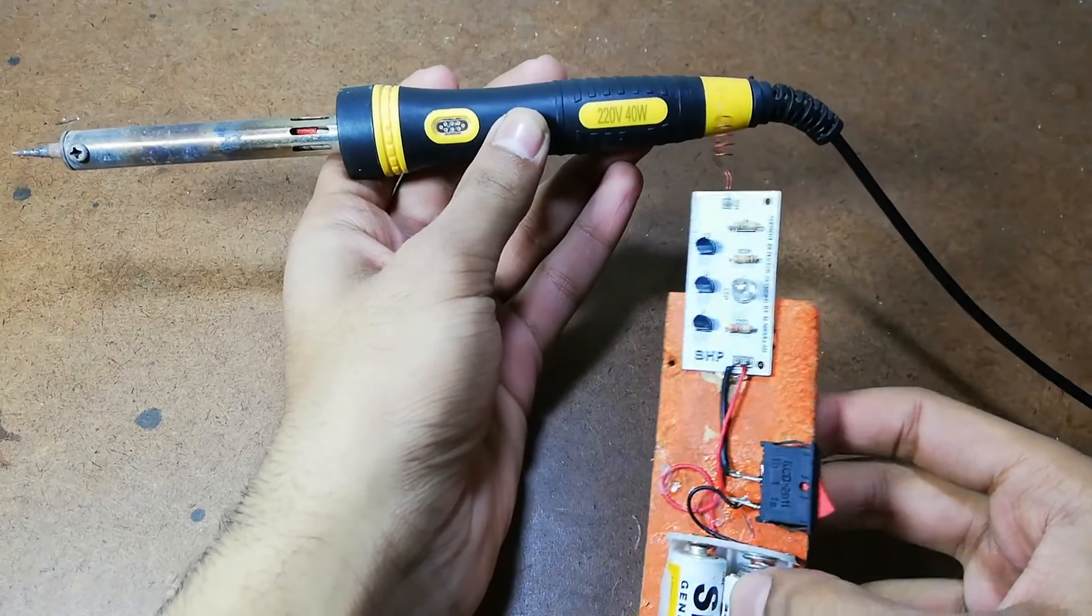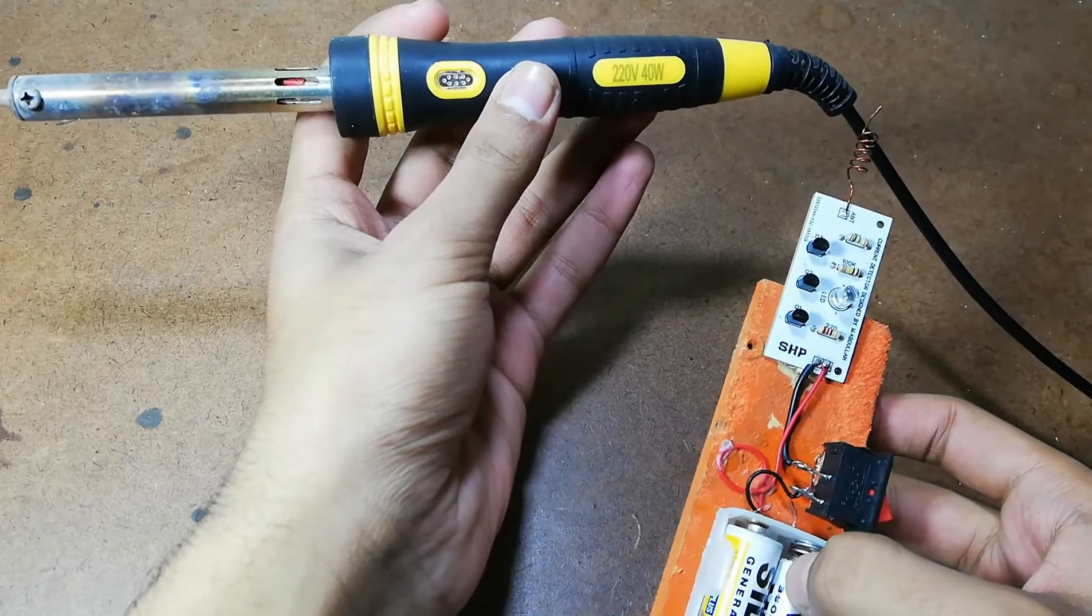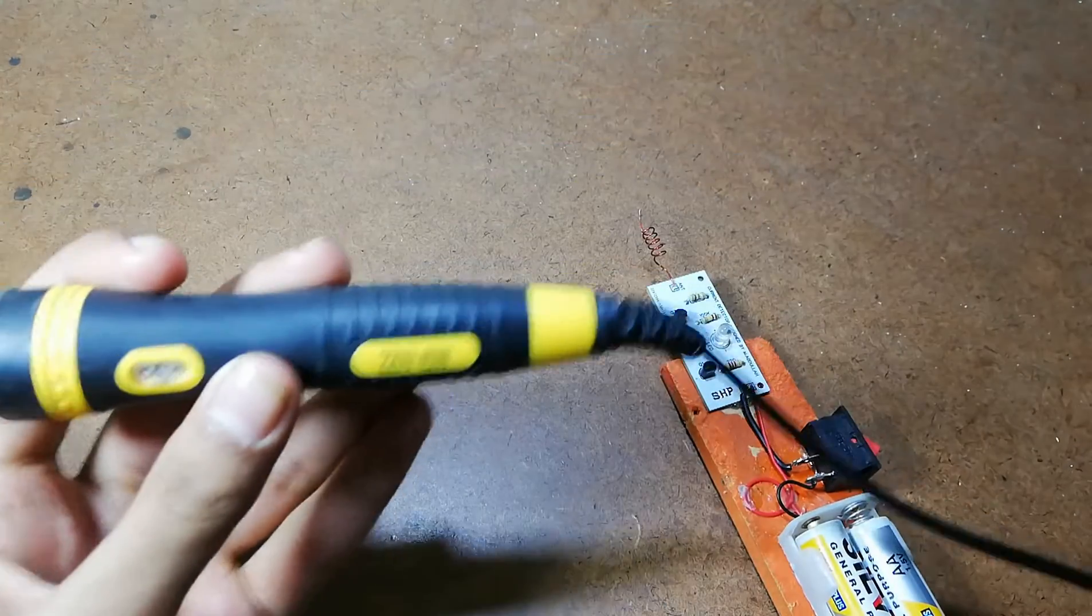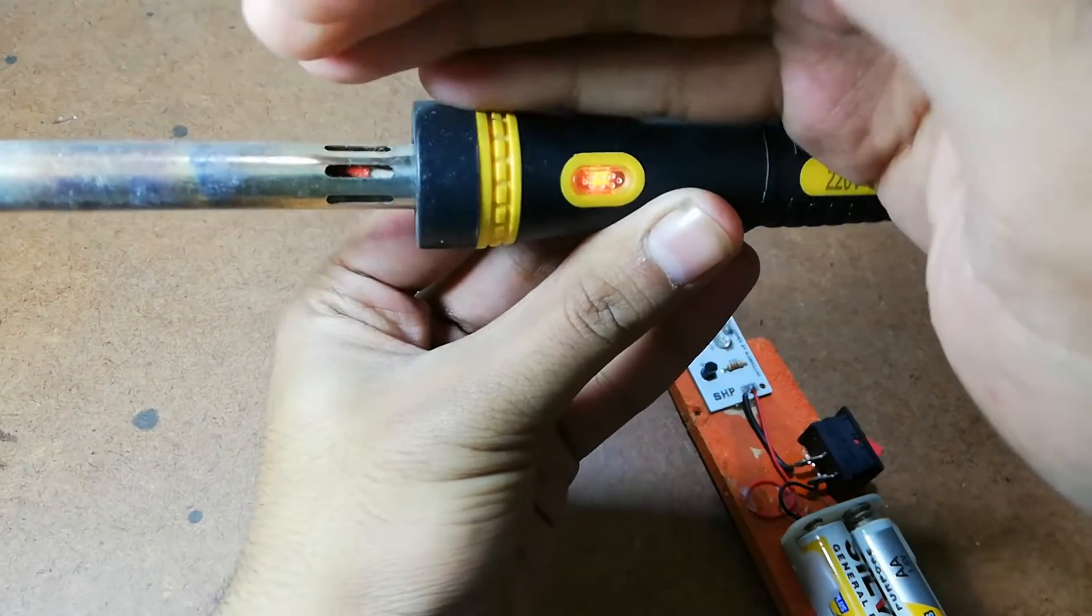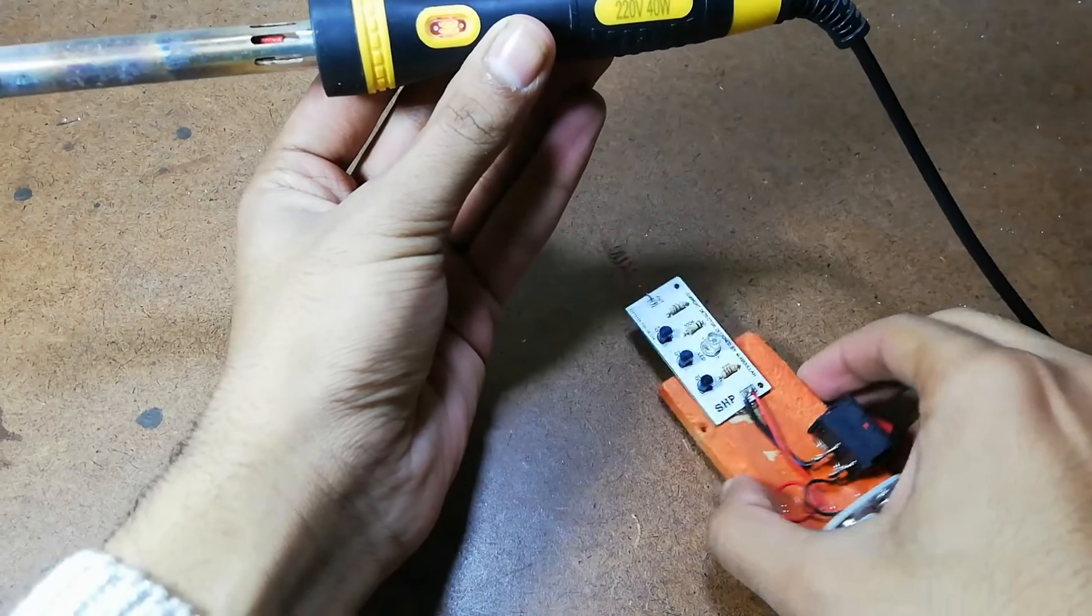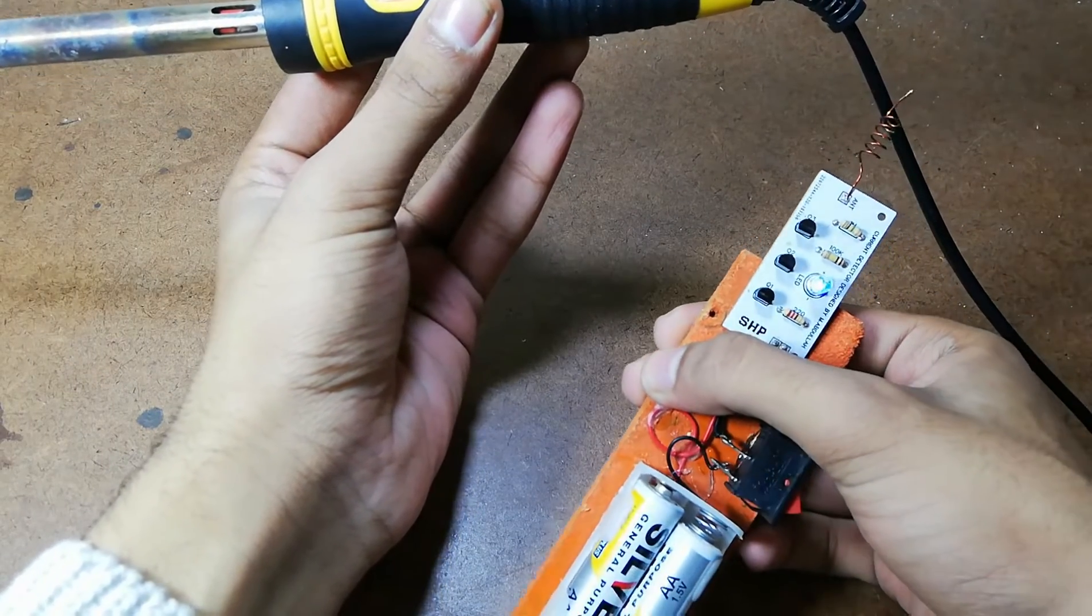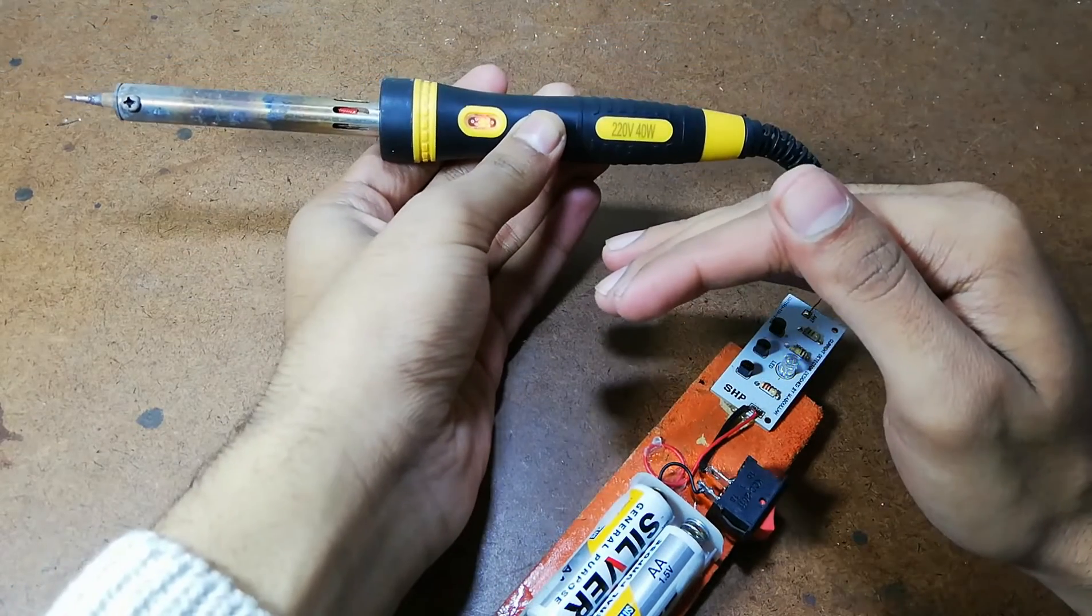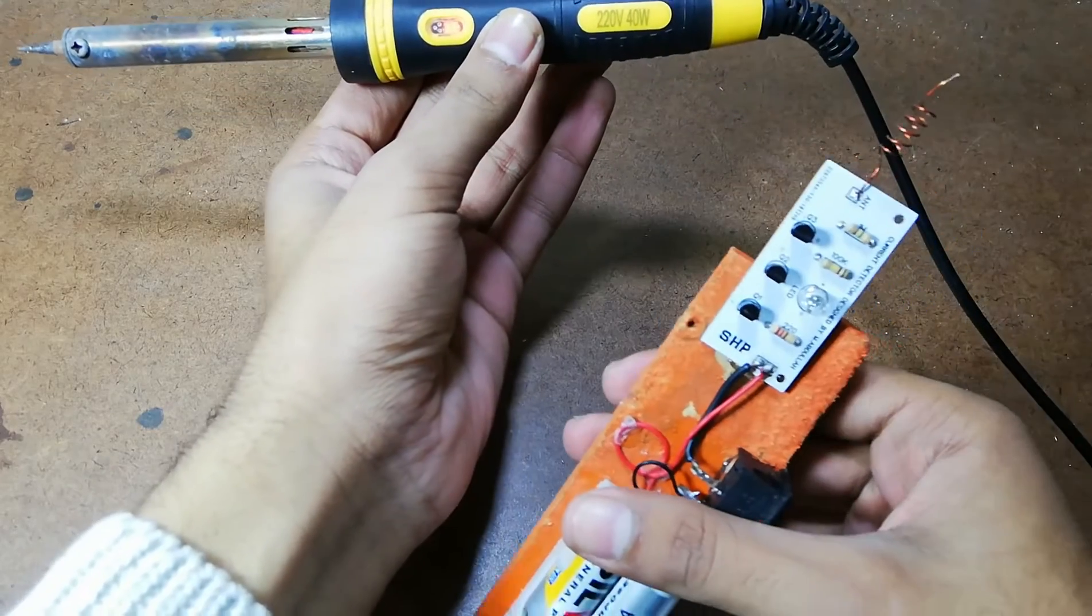And here friends I have a soldering iron and you can see that our LED is not glowing, which means that the current is not flowing at this time. And now I'm going to plug it in. And now you can see that the LED is glowing, which indicates that the soldering iron contains current now.